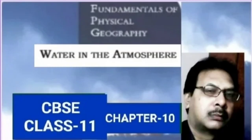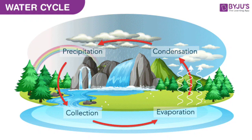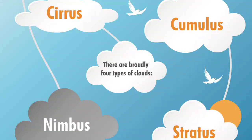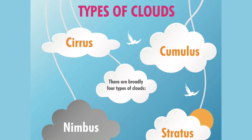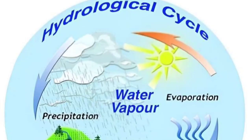The formation of clouds in the atmosphere is an important part of the water cycle. The clouds that form in the sky are basically four types. The formation of clouds takes place because of condensation of water vapor in the atmosphere.